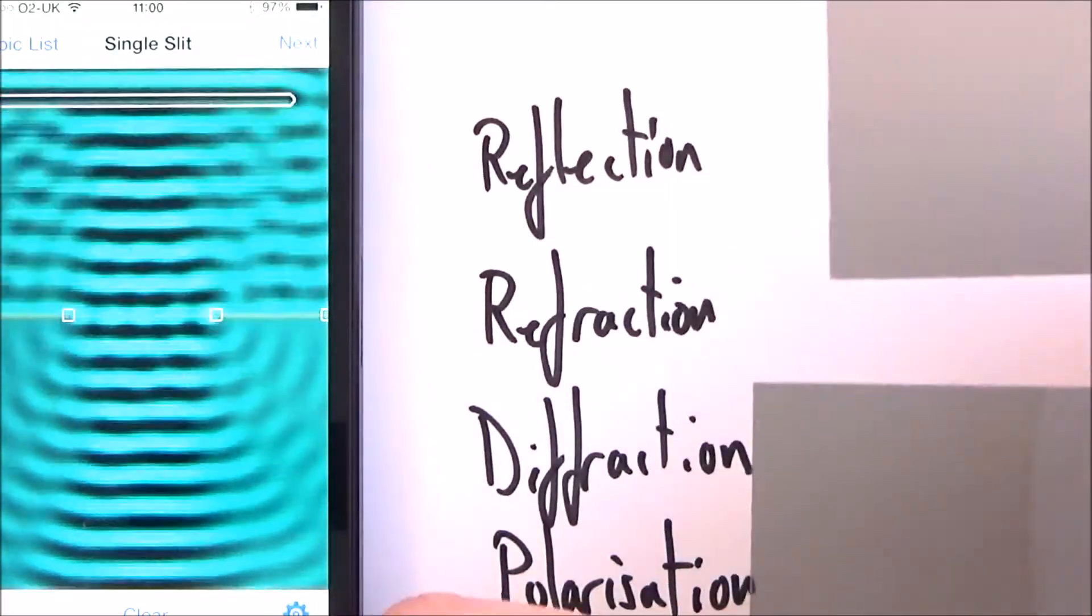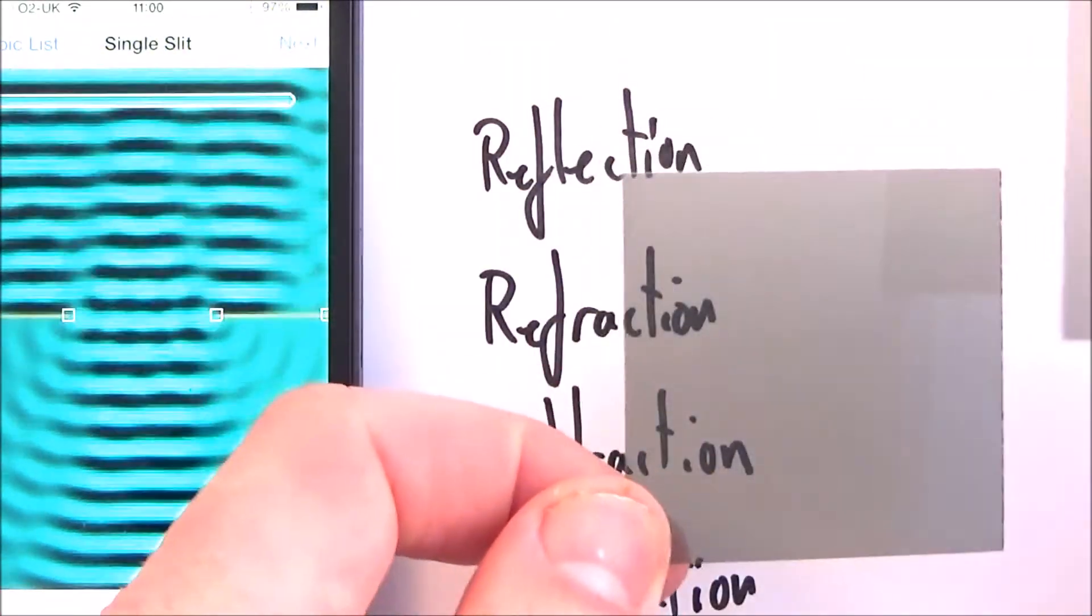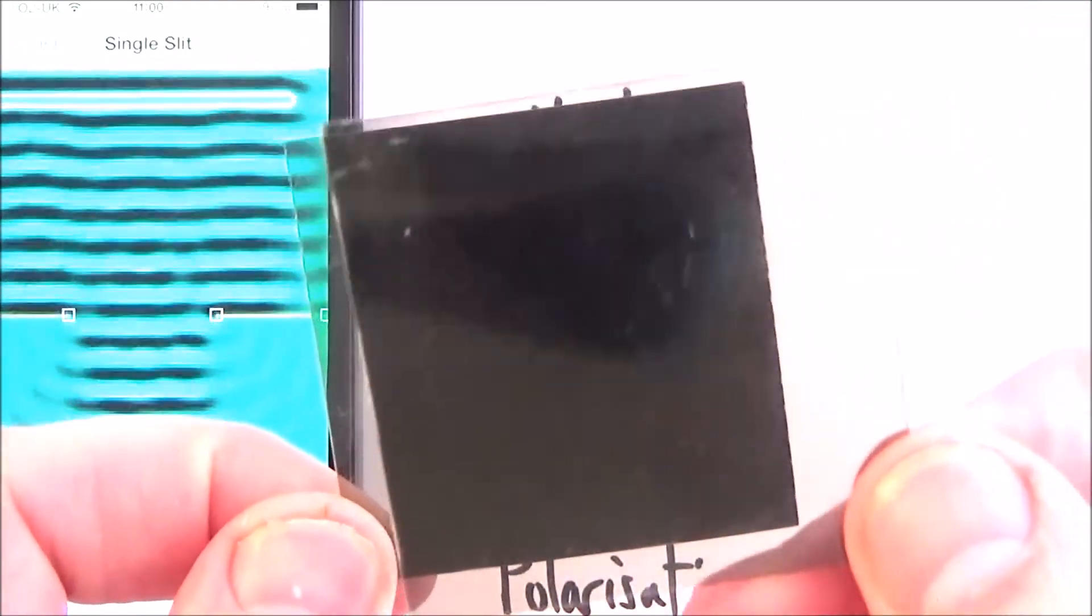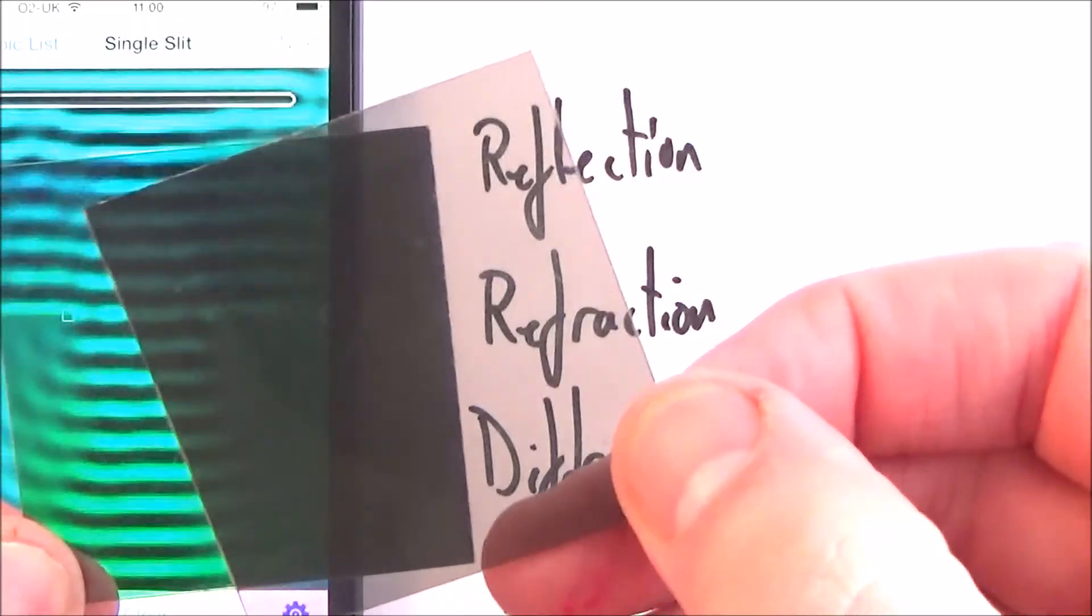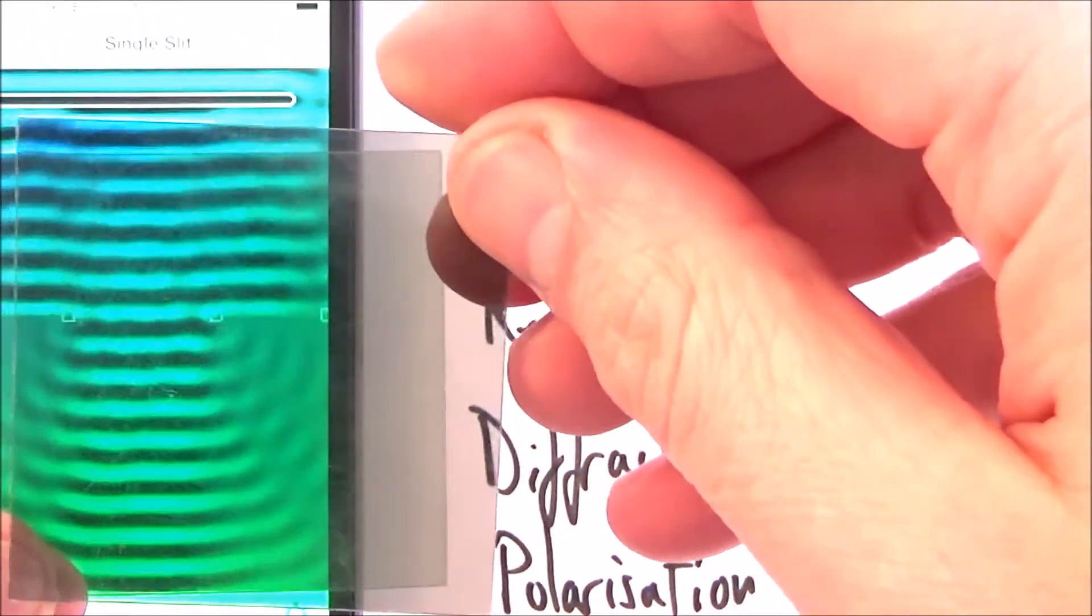And what I have here are two pieces of Polaroid. And what they do is they do let a lot of light through. However, if I put one piece of Polaroid in front of the other, we can see it starts to block out that light. And it's only when I rotate it again so that the two Polaroid filters are in the same plane, that we let that light through.